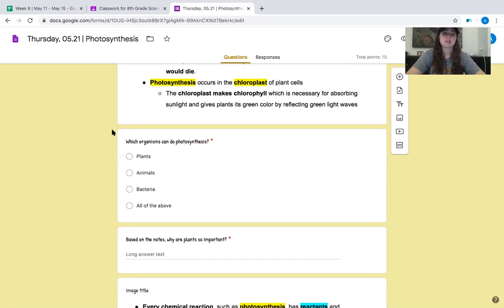All right, so which organisms do photosynthesis? A, plants, B, animals, C, bacteria, or D, all of the above? You should have said A, plants. Only plants do photosynthesis.